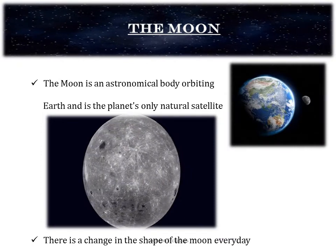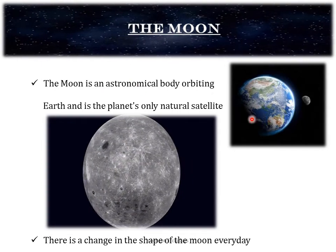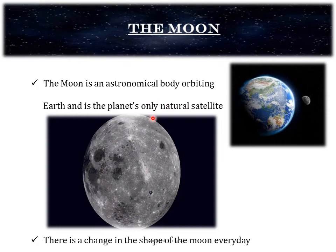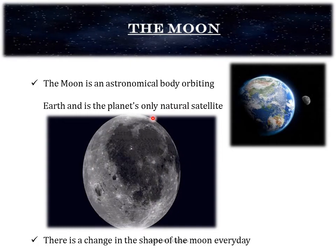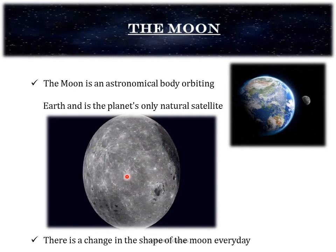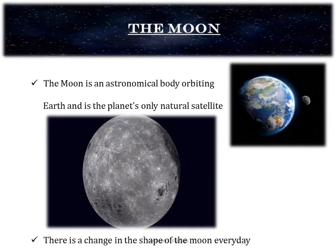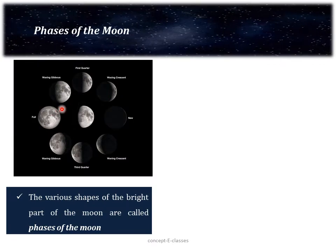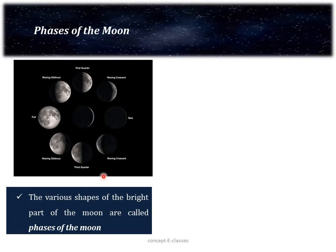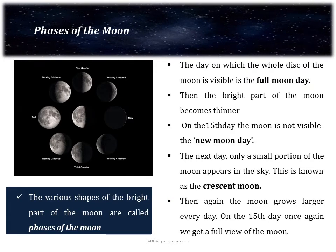The first celestial body we are going to study is the moon. The moon is an astronomical body which orbits around the earth, and it is our planet's only natural satellite. If we observe the moon continuously for several nights, we can observe that there is a change in the shape of the moon every day. Sometimes it is fully round, sometimes no moon is seen, and sometimes it appears as a crescent shape. These various shapes of the bright part of the moon are called the phases of the moon.